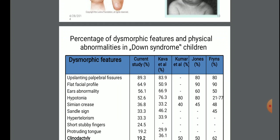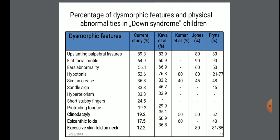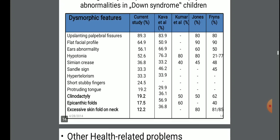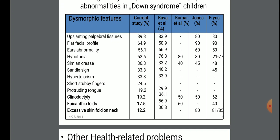Percentage of dysmorphic features and physical abnormalities in Down syndrome children. The percentage chart shows dysmorphic features: up-slanting palpebral fissures are the most common at 89.3%. Likewise, all dysmorphic features including flat facial profile, ear abnormality, hypotonia, sandal sign, etc. are shown in this chart.